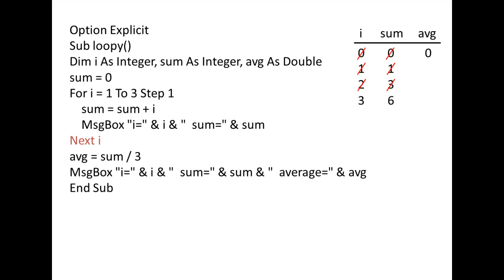We arrive at the next i statement and increase the value of i by 1. i now has the value of 4. Since i is now greater than 3, we exit the loop. avg is assigned the value of sum divided by 3, which is 6 divided by 3, or 2. A message box displays the value of i, sum, and avg, which are 4, 6, and 2.